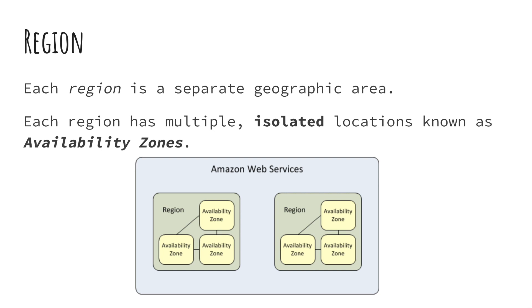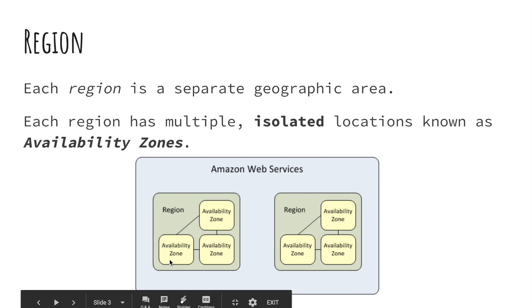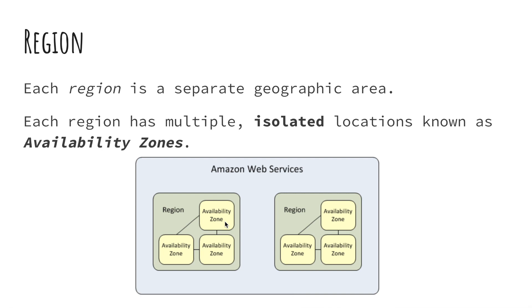Each region has multiple isolated locations known as availability zones. A region consists of many availability zones. Now we have established the relationship between region and availability zone.